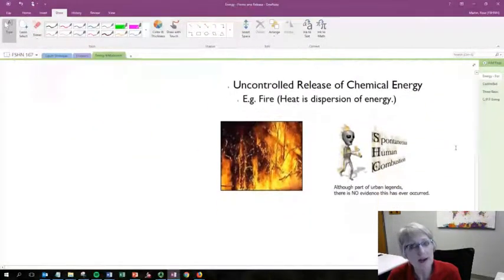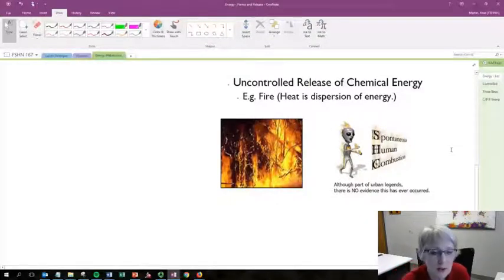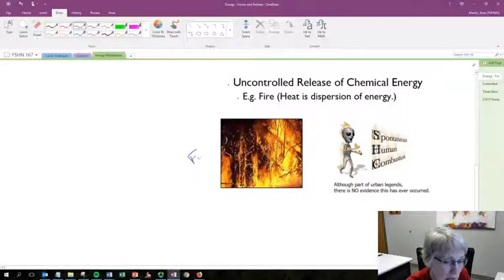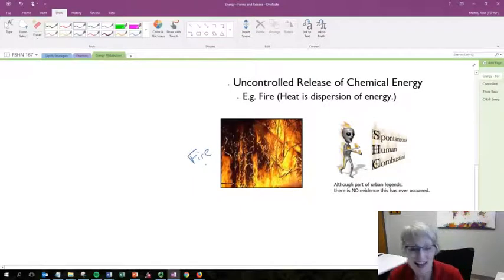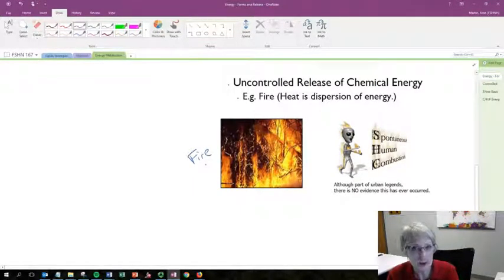Think about how we're going to do that. If we first think about uncontrolled release, just release all that energy. If we have uncontrolled release of chemical energy in wood, we have fire. And that heat is the dispersion of that energy.